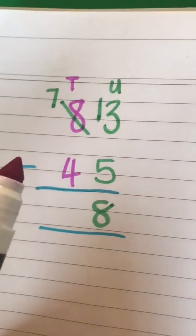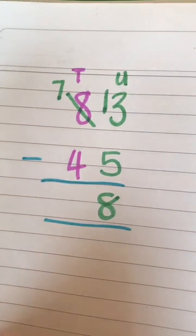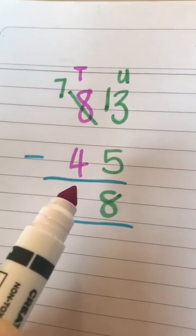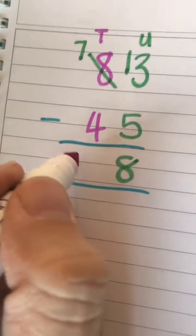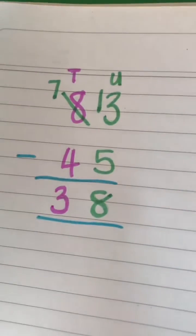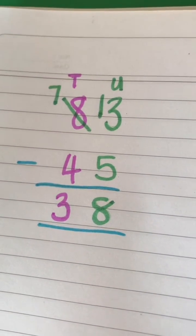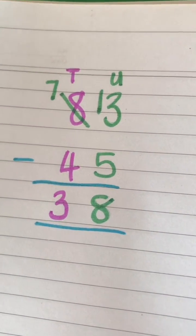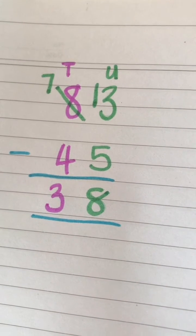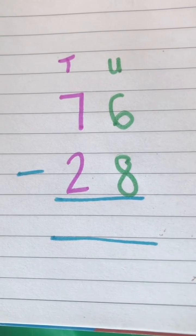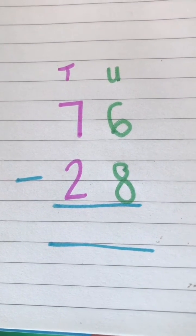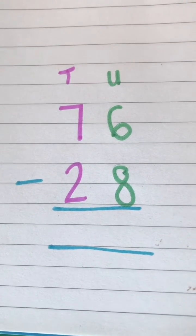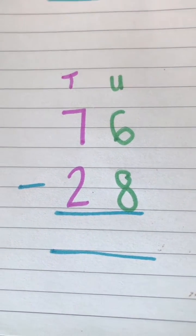minus 45 gives me 38. Let's have a look at another example. So I've got 76 minus 28. So as normal, we always start with our units column. So we've got 6 minus 8. Now we can't actually do that,